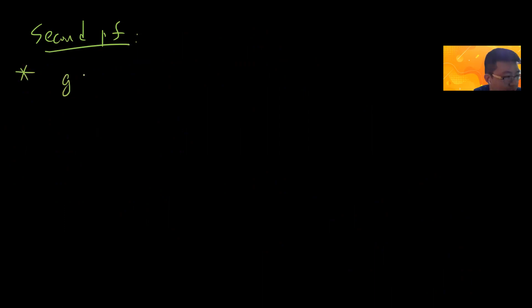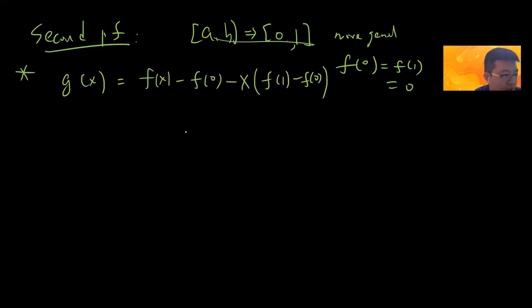The starting point is let's define g(x). By the way, I can assume that [a,b] is basically just [0,1]. I don't have to worry, I just shift [a,b] to be [0,1]. And more generally, I can assume that f(0) and f(1) is 0. The reason is that I can take g(x) to be f(x) - f(0) - x(f(1) - f(0)). So from here you can see g(0) and g(1) equal 0.